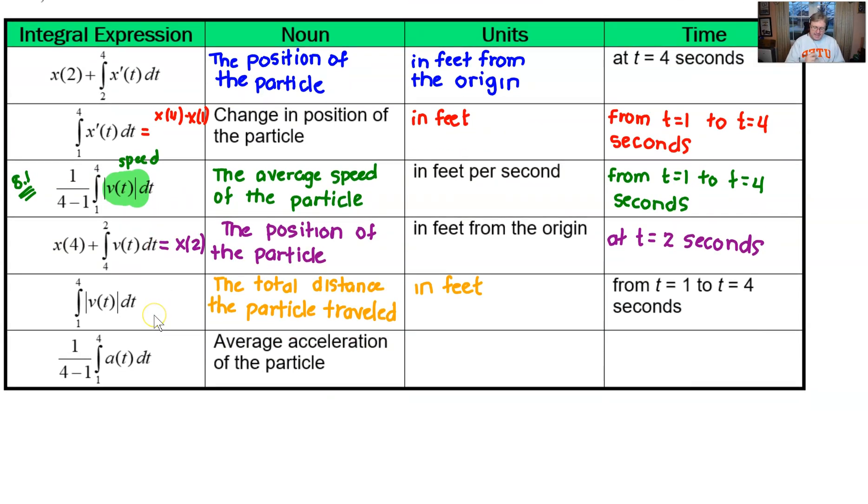And last but not least, we have the one over four minus a integration from 1 to 4 of a(t). Hopefully you see immediately that those values given in front indicate an average value of a function. What function are we trying to find the average value of? The one called a. That's the acceleration. So instead of saying the average value of the acceleration, we can abbreviate that as average acceleration of the particle. Now, the other two columns are for us to fill in. Think about acceleration for a moment. What would it be typically measured in?